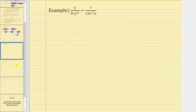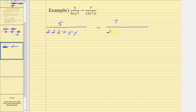For the next example, we begin by writing out the prime factorization of the two denominators, and we will also expand the variable factors. For the first fraction, the prime factorization of 8 is 2 times 2 times 2, and then we have one factor of x and two factors of y. For the second fraction, the prime factorization of 12 is 2 times 2 times 3, and then we have two factors of x and a factor of y. Beginning with the factor of 2, the first denominator contains 3 factors of 2 and the second contains 2, so we multiply the numerator and denominator of the second by a factor of 2. For the factor of 3, the first denominator contains 0 factors of 3 and the second contains 1, so we multiply the numerator and denominator of the first by 3.